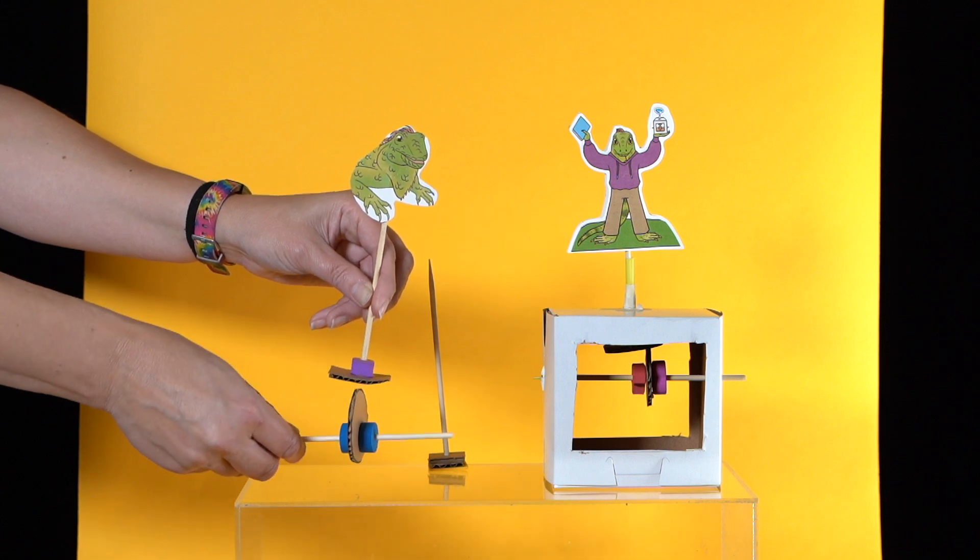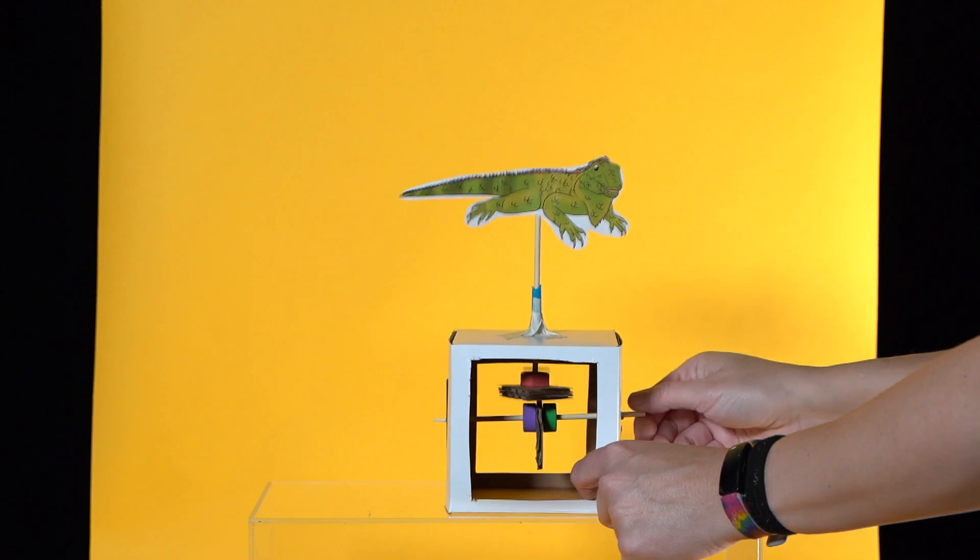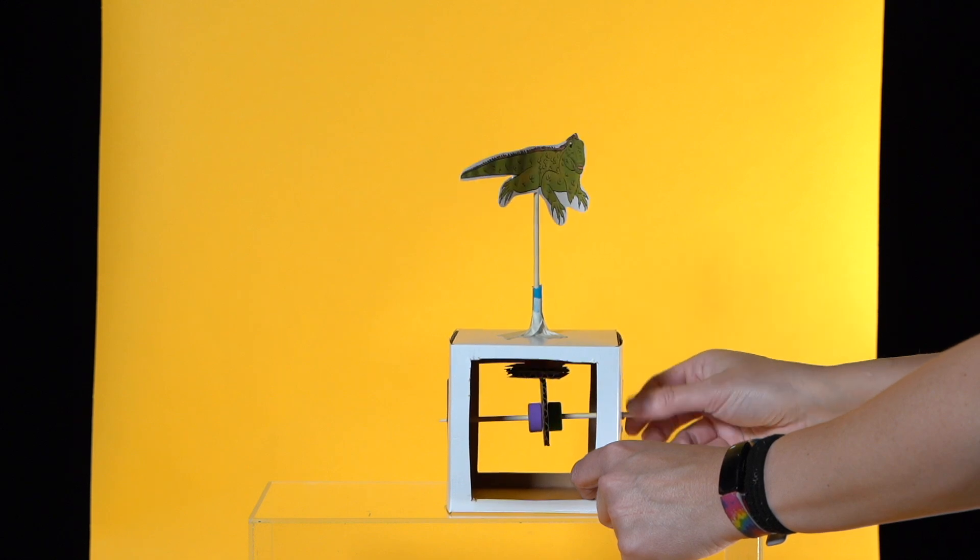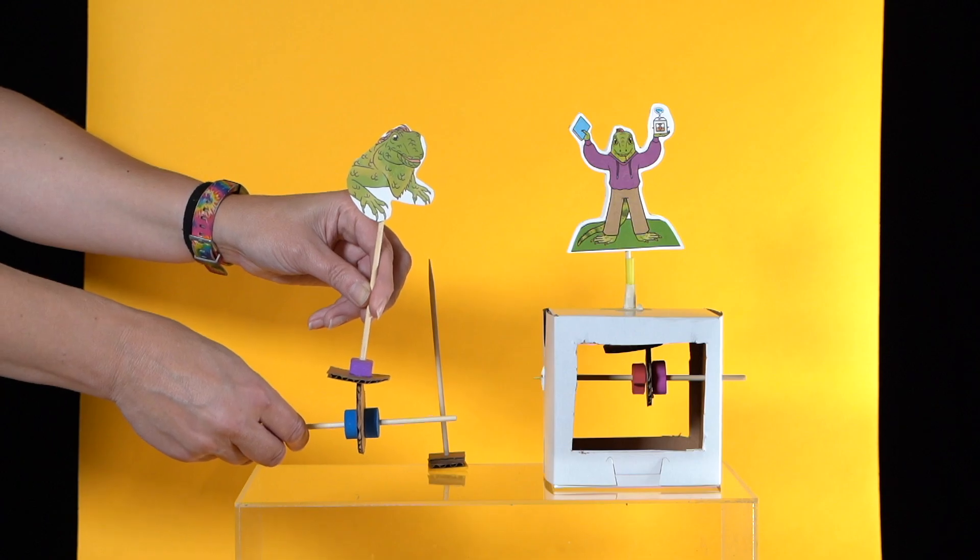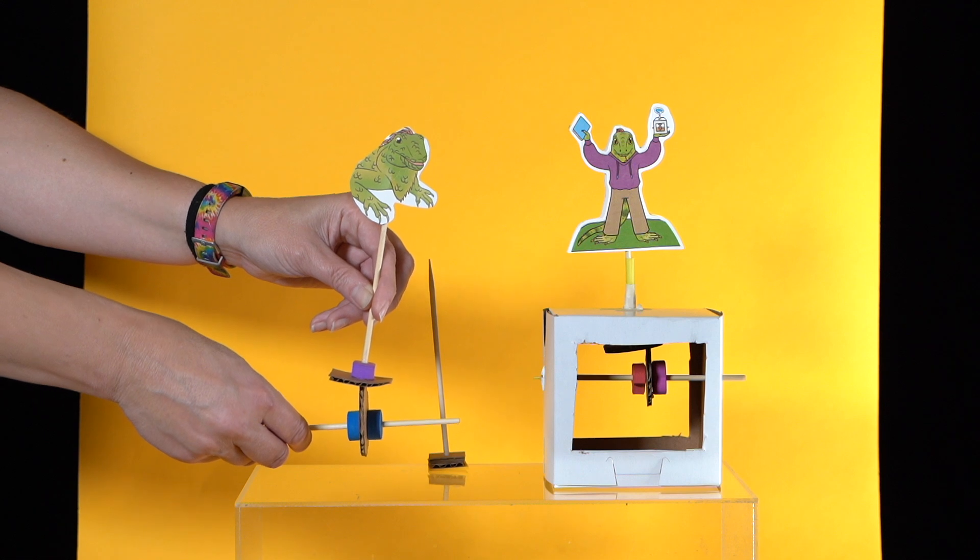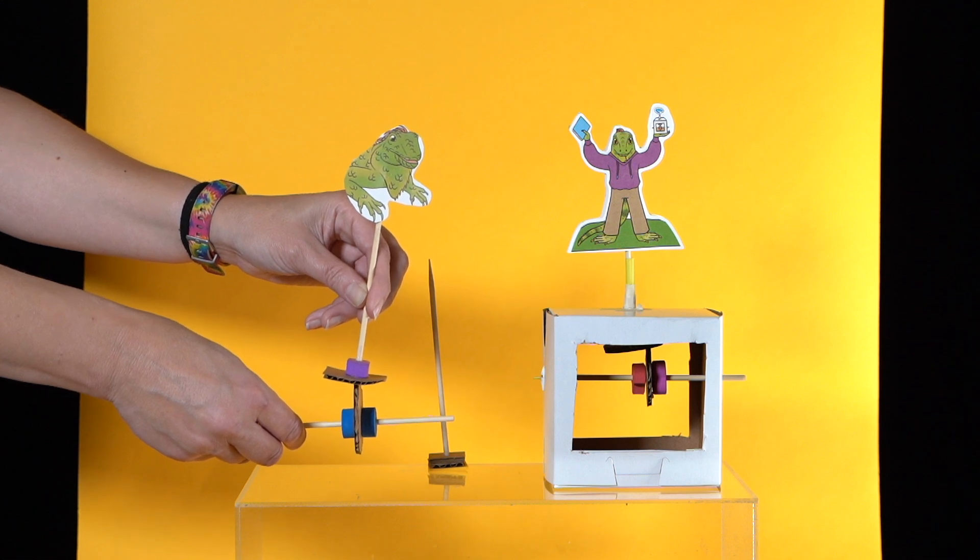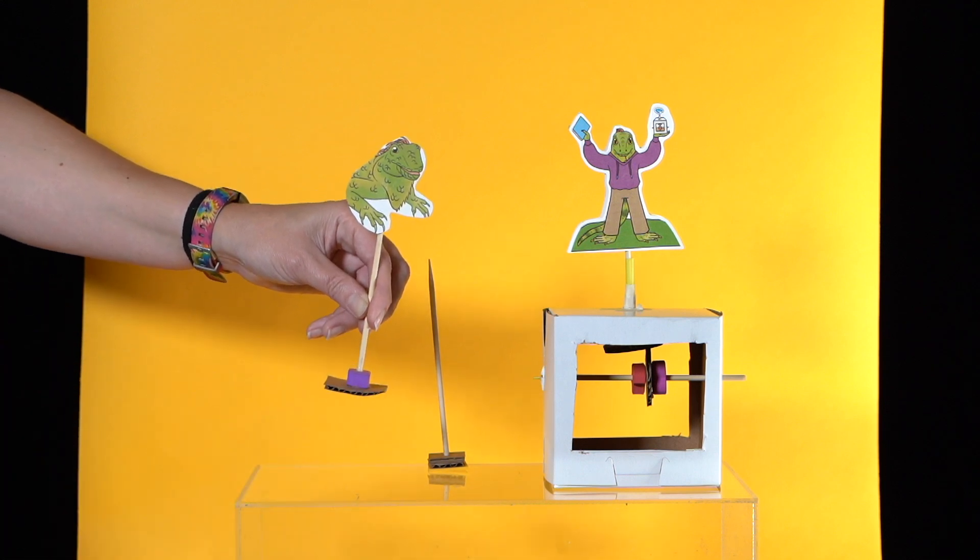The round cam with the axle off to one side makes the cam follower go up and down, like this. This time the cam should be directly centered under the cam follower so that the cam follower doesn't spin.